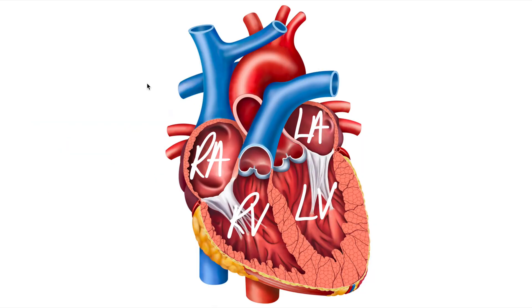First we need to make sure we understand that this is the right side of the heart and this is the left side of the heart. We've got to look at this heart from the anterior view, thinking of the anatomical position — making this the right side of the body and the left side of the body. So this is the right atrium, this is our right ventricle, this is our left atrium, and then this is the left ventricle — these are the four different chambers of our heart.